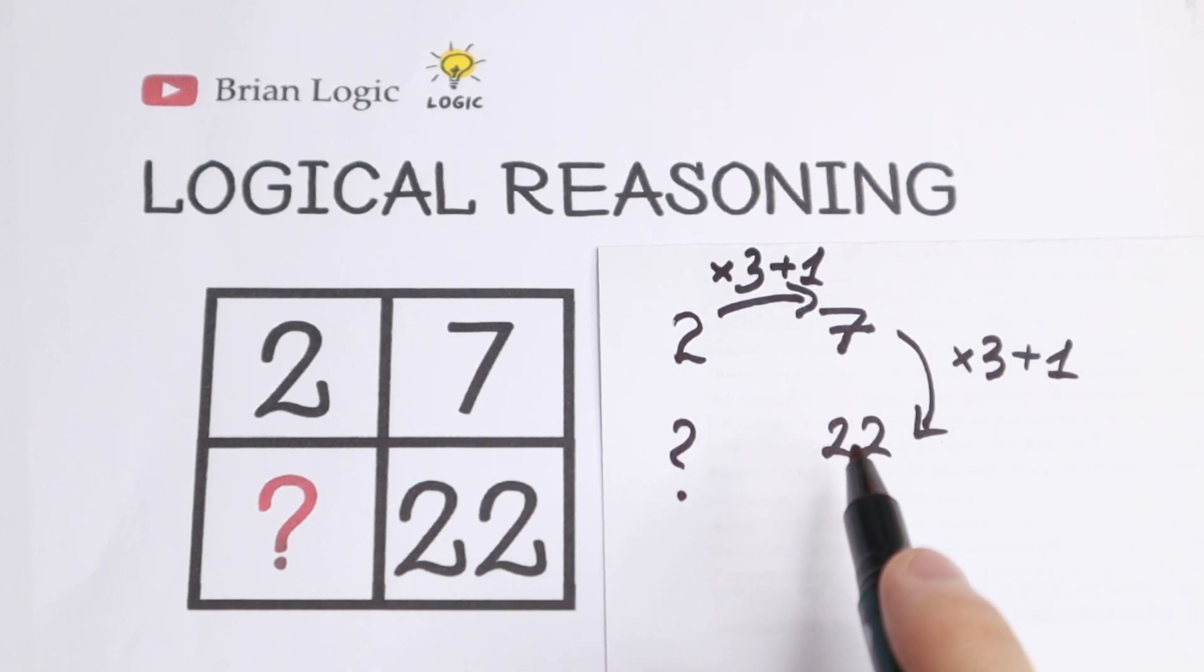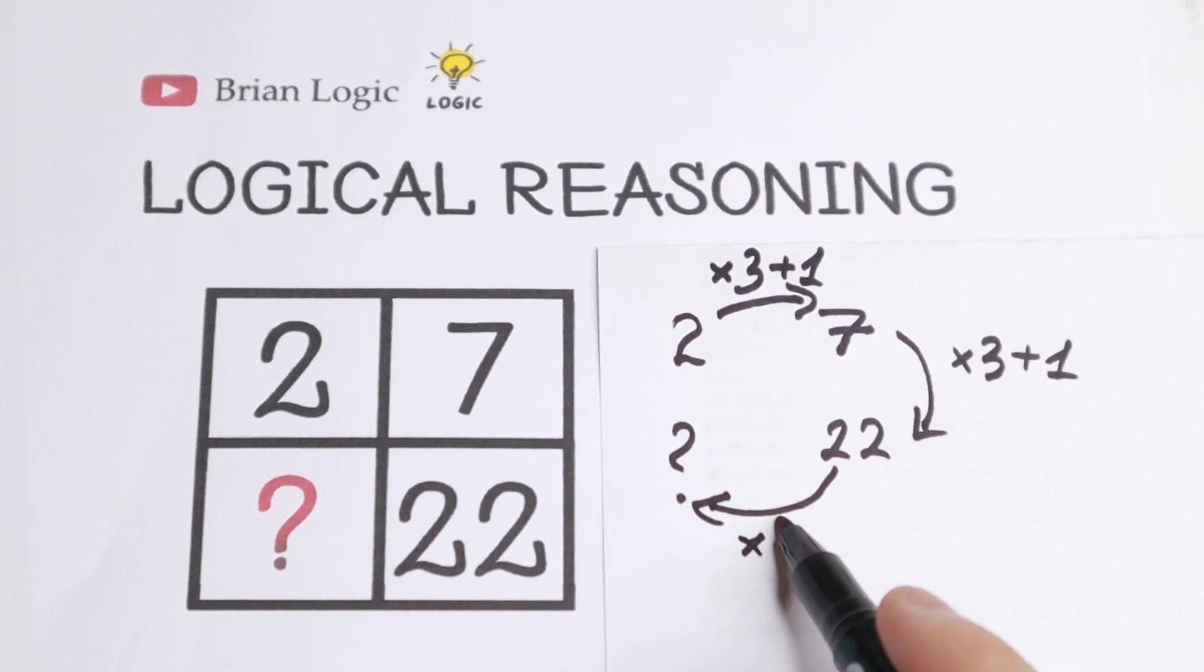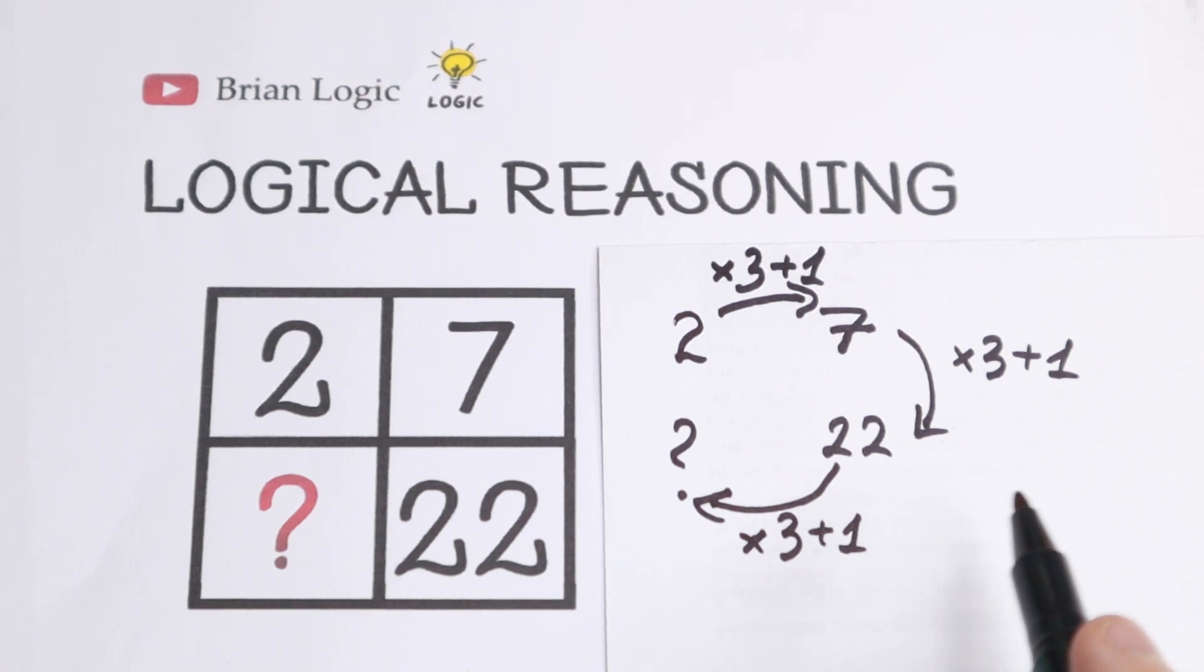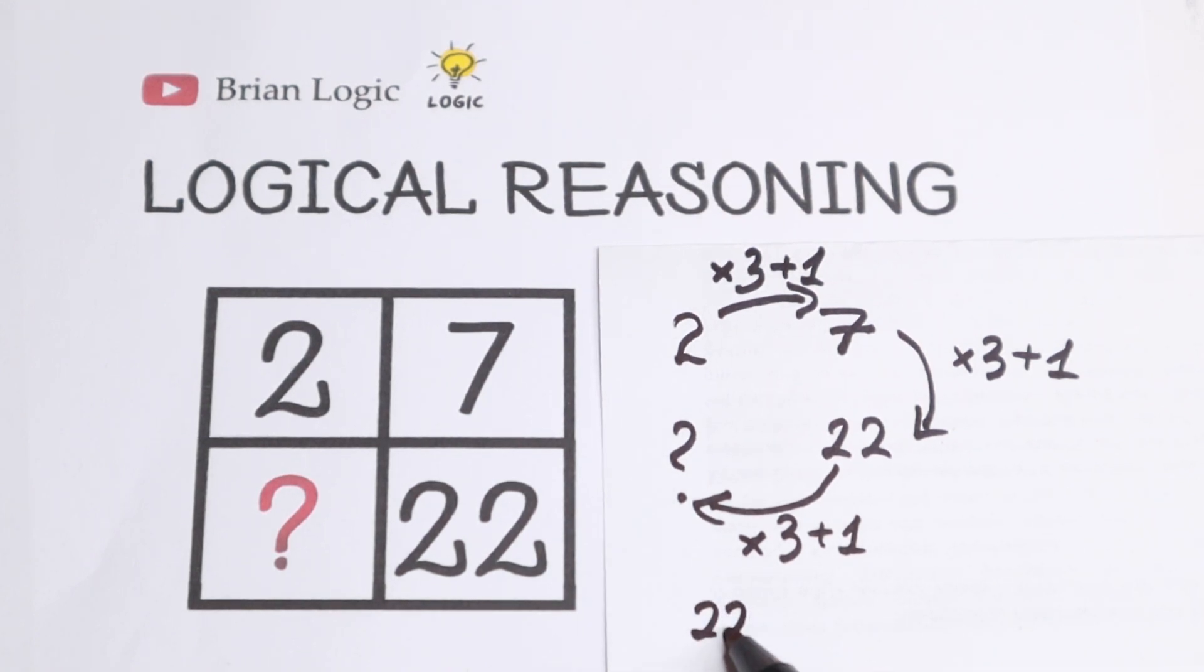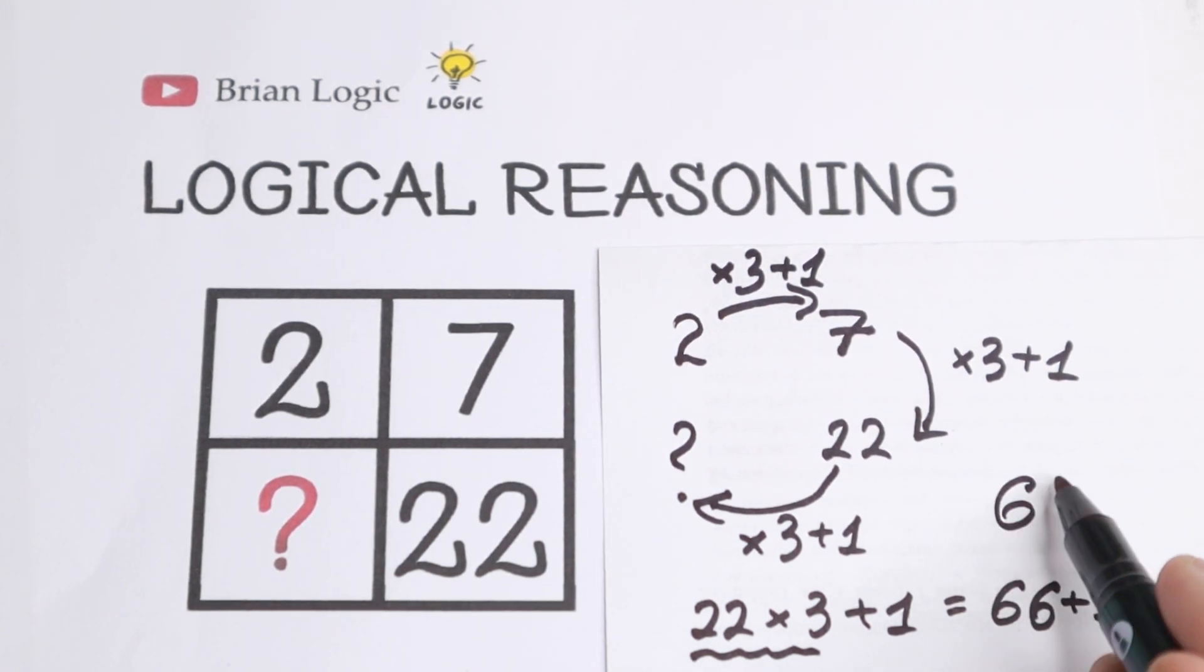But what about the last number? Let's check, maybe we'll have this option right here. So we need to multiply this by 3 and add 1 in this way. Let's find this answer. We'll have 22 times 3 and add 1. We know that firstly we need to multiply it. We will have 66 plus 1. So as you can see, if we add it, we will have 67.